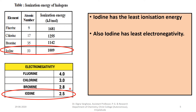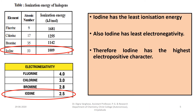Electronegativity is the power of an element to attract electrons. Iodine has the least electronegativity value, so it has less power to attract electrons and a maximum tendency to lose electrons. Combined with its lower ionization energy, iodine is the most electropositive element among halogens from fluorine to iodine.